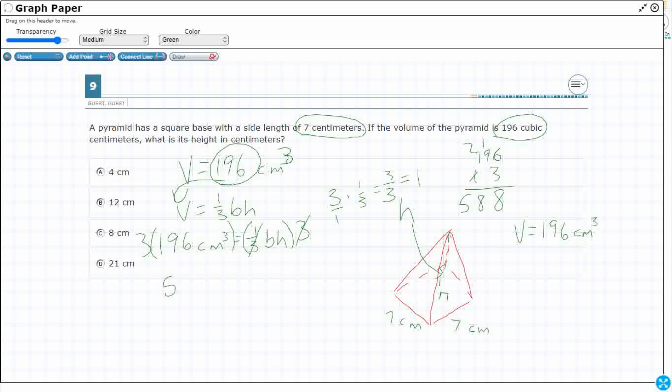So 588, I'll drop the cubic centimeters because we're just looking for a number here, equals base times height. Well, I don't know what the height is, but you know what? I can figure out what the base is. Look at this base, we're looking at the area of this base. So what is the area of this base?